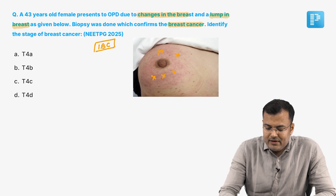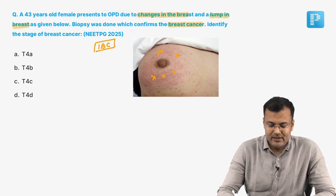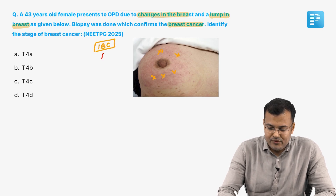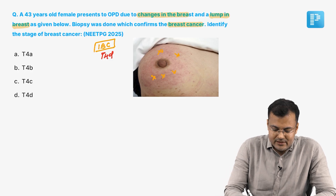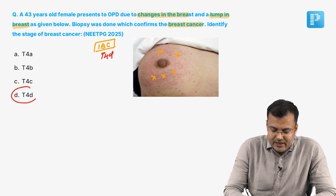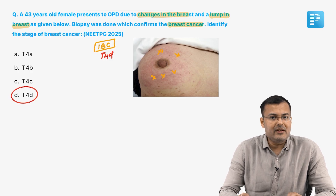Inflammatory breast cancer — what is the stage? The stage is T4D. So, inflammatory breast cancer, the stage is T4D. The correct answer is option D.